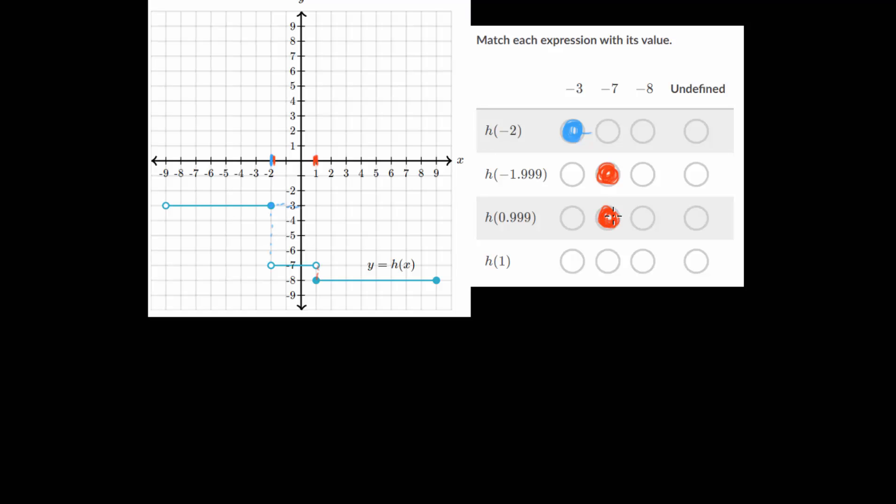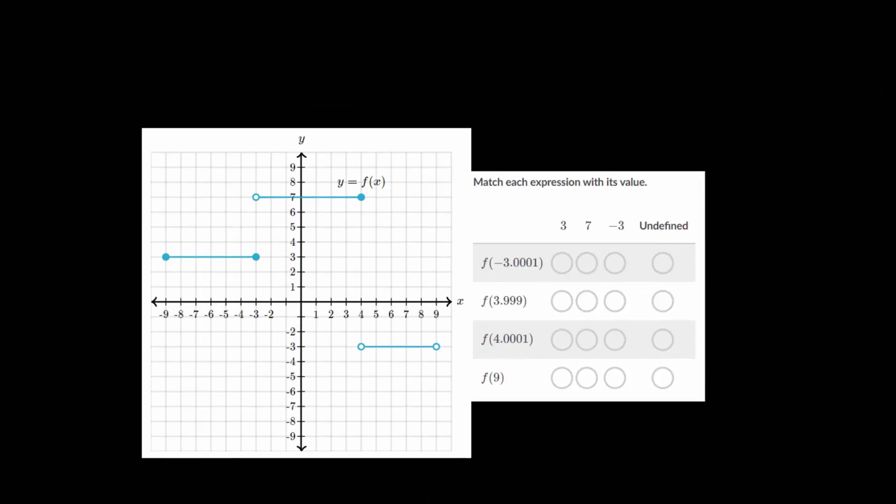And then we actually go to that border point at 1 here. And h of 1, we're looking for the filled in circle. And that's down below on this bottom step. That's at negative 8. So let's do one more of these problems, just so that you can feel comfortable.